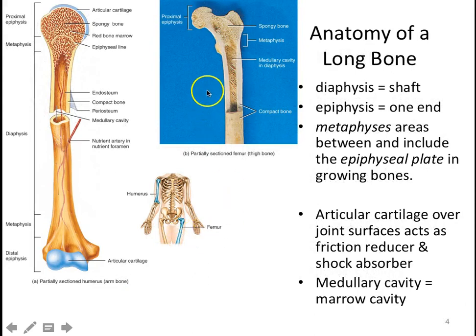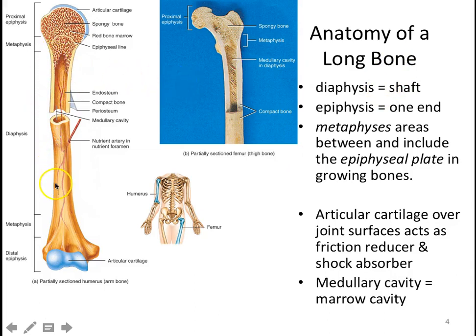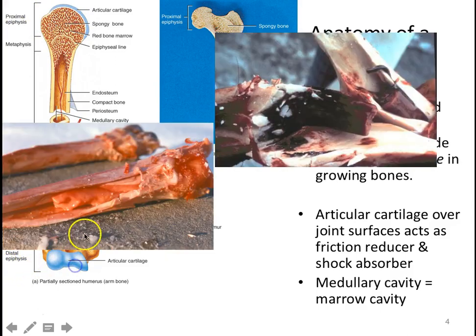Let's take a look at a long bone. Here's a skeleton — here's the humerus, the arm bone, and then the femur or thigh bone. These are considered long bones. The shaft in the middle is called the diaphysis. The epiphysis is the end — here's the proximal epiphysis, which is close to the shoulder, and here is the distal epiphysis, which is the far end.